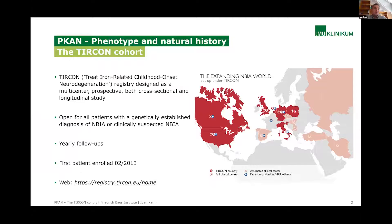For those not familiar with TIRCON, it stands for Treat Iron-Related Childhood Onset Neurodegeneration. It is a large NBIA registry designed as a multi-center prospective registry containing both cross-sectional and longitudinal data. It is open for all NBIA forms, or even clinically suspected NBIA without a final genetic diagnosis. Many TIRCON partners actively contribute to the registry, and it is designed as a yearly follow-up registry.